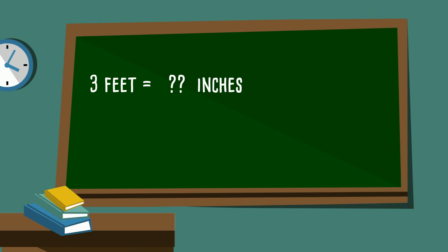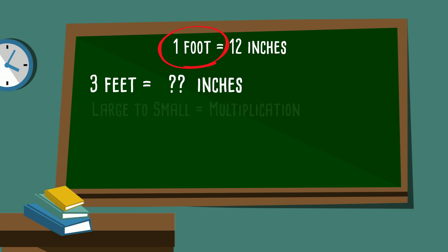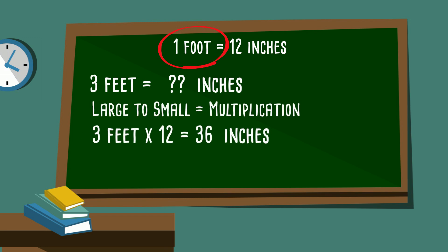Example number one: you have 3 feet equals how many inches? Your hint is 1 foot equals 12 inches. So which unit of measure, feet or inches, is the largest? Remember, the smaller the number, the larger the unit. So foot is larger than inches. So we're going to multiply, and 3 times 12 equals 36 inches.